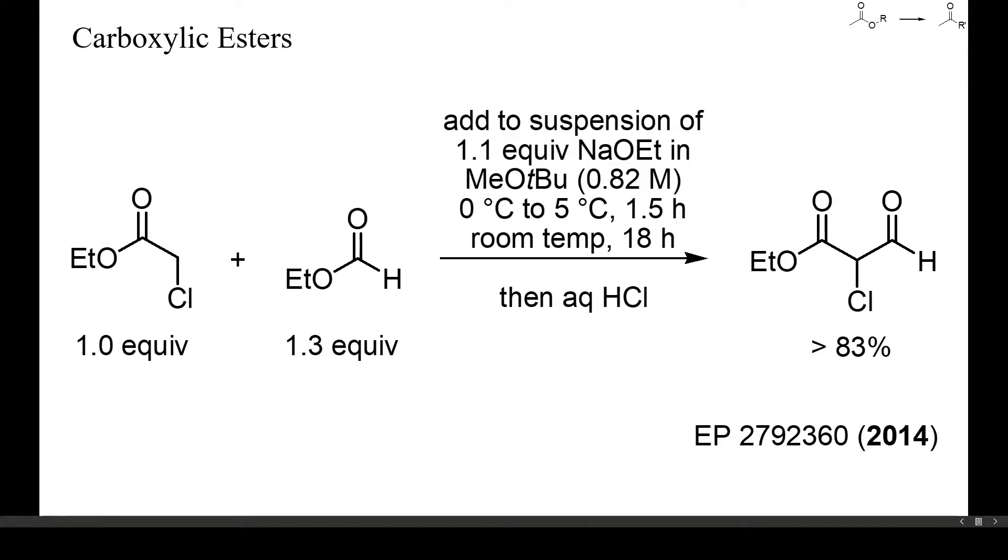Formates are another type of electrophilic ester suitable for mixed Claisen condensations. Neither alkyl formates nor the resulting alpha-formyl esters are particularly stable. Formates slowly decompose to carbon monoxide upon treatment with bases. Enolizable alpha-formyl esters tend to oligomerize. Anyway, as shown here, these compounds are stable enough during Claisen condensations and the products are valuable synthetic intermediates.